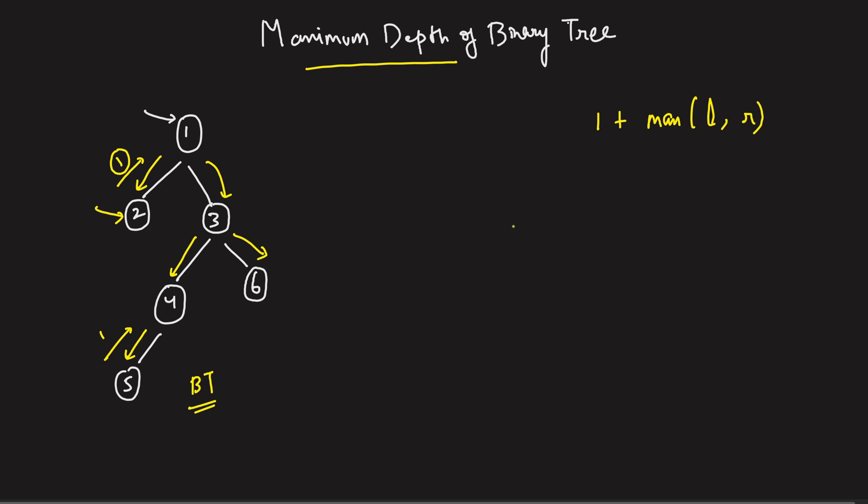So whenever you are standing at node 4, you actually said 1 plus max of left. What did left give you? 1. What will right give you? 0. So can I say for this node 4, the answer came out to be 1 plus max of 1 comma 0. That's 1 plus 1, 2. So for this node 4, I ended up getting a height of 2.